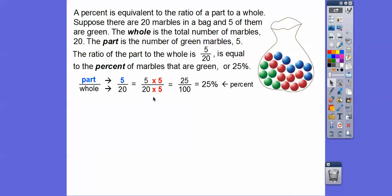If we multiply 20 times 5, that'll get us 100. And then 5 times 5 is 25. So remember, we've got to multiply the top and bottom by the same. So percent is per 100. To make this 100, this is going to have to be 25 or 25 percent.